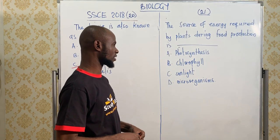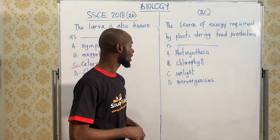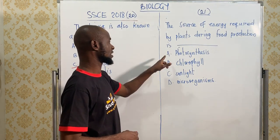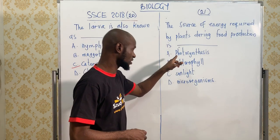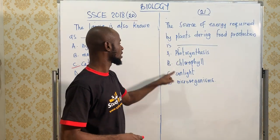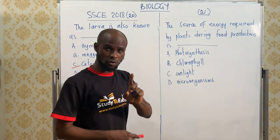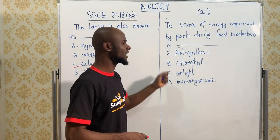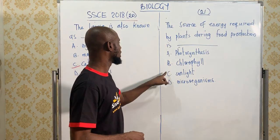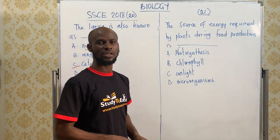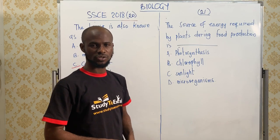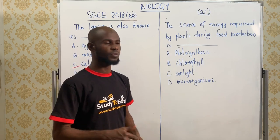Now the source of energy required by plants during food production — it's the simplest. I know the answer is not going to be photosynthesis, because photosynthesis is a process. It's not going to be chlorophyll, because chlorophyll is a green pigment. While sunlight is the source of energy required for photosynthesis. Goodbye.